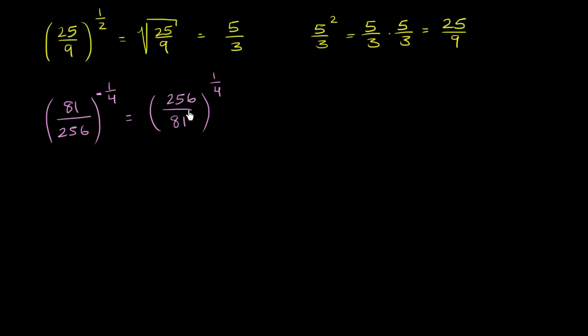And so now I can say, well, what number times itself, times itself, times itself is going to be equal to 256? And what number, if I take four of them and multiply, do I get 81? And one way to think about it, this is going to be the same thing. We'll talk about this in more depth later on when we talk about exponent properties. But this is going to be the exact same thing as 256 to the 1/4 over 81 to the 1/4.